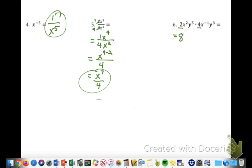Then you're going to look at your x variables. And when we're multiplying, we add those. So 2 plus a negative 1 is just 1, so x to the 1st power.